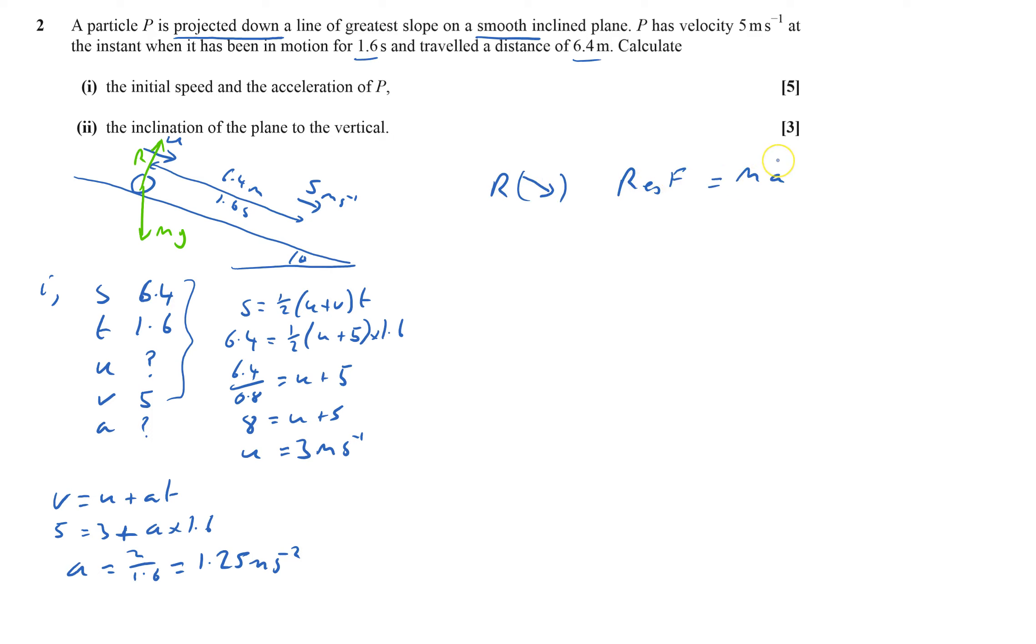The resultant force is made up of those two, so this bit here will be mg sin theta. So I'll get mg sin theta equals m times my acceleration which is 1.25, and m's will cancel out.